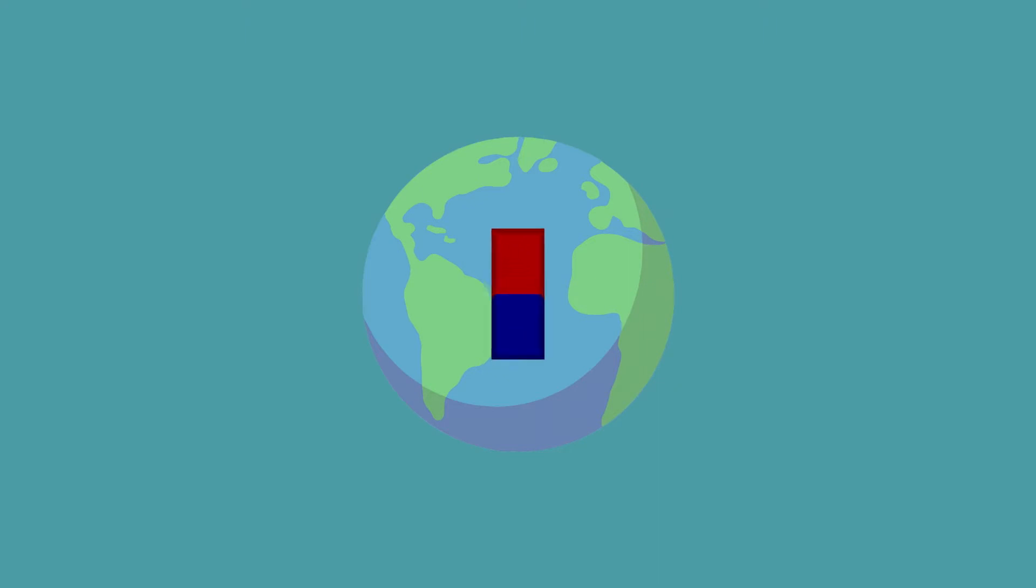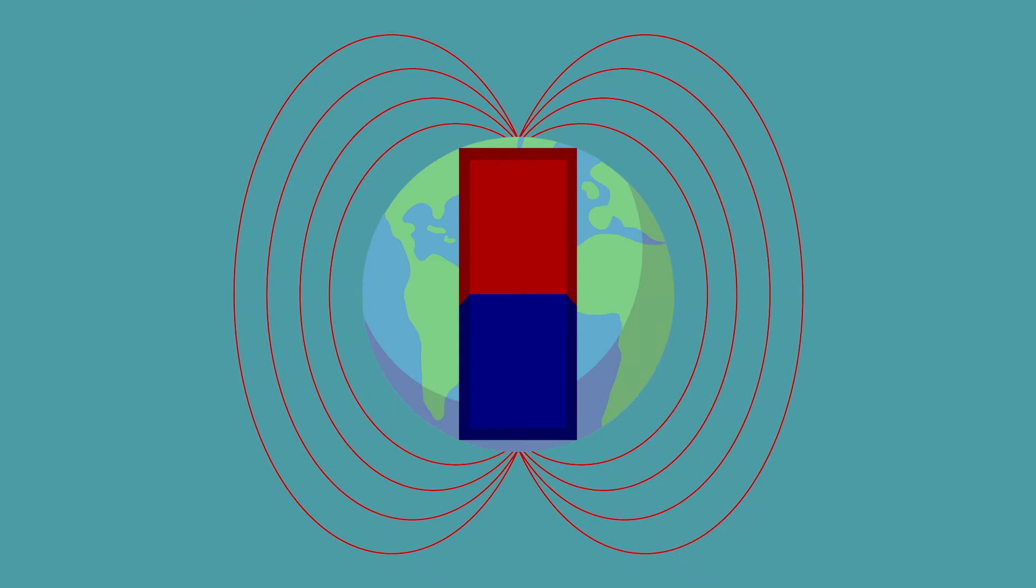Magnets have north and south poles, just like the Earth. The Earth is like a giant magnet, with magnetic field lines stretching between the north and south poles.